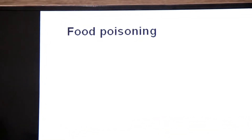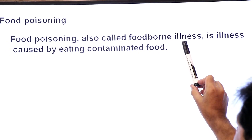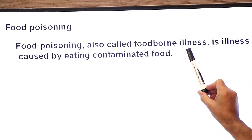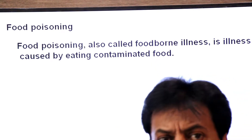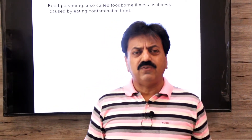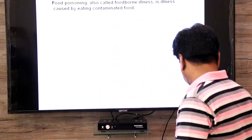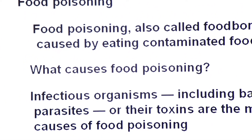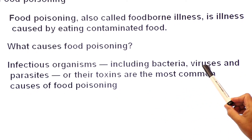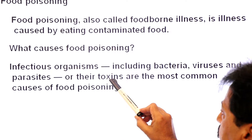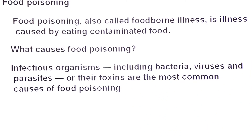Now, what is food poisoning? Food poisoning, also called foodborne illness, is an illness caused by eating contaminated food. We get food poisoning when we eat food contaminated with viruses, bacteria, and other germs. The causes of food poisoning are infectious organisms including bacteria, viruses, and parasites, and their toxins. When they contaminate food, they release toxins which are the most common cause of food poisoning.